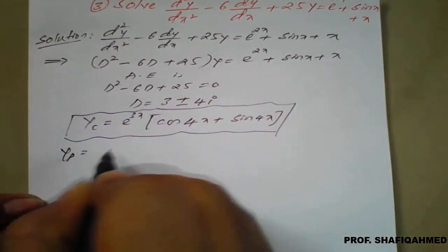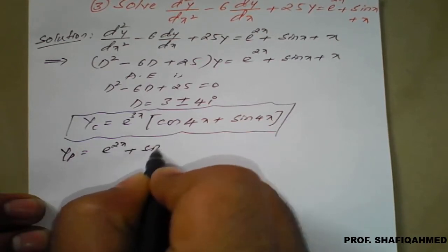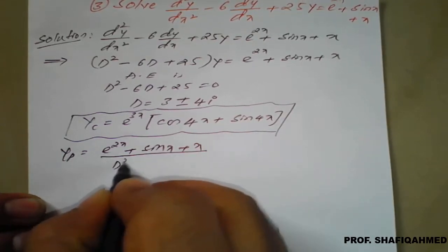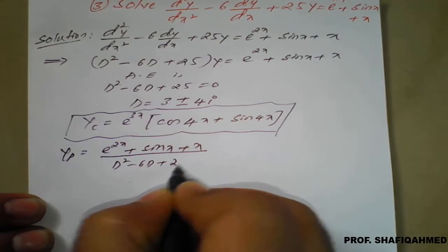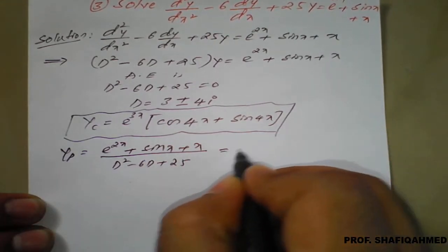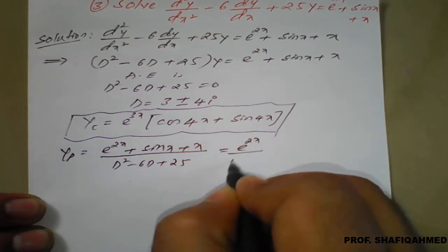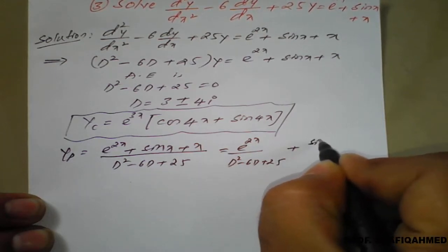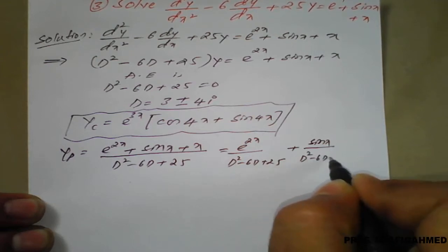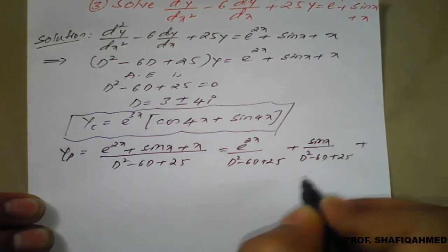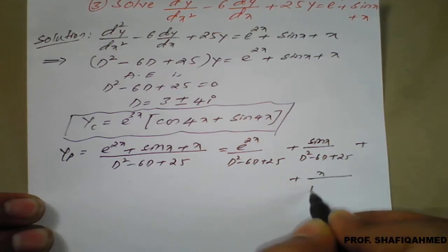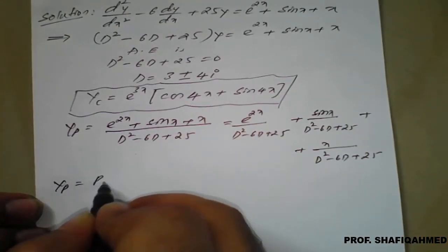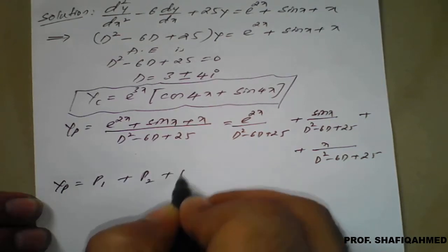Yp is given by e raised to 2x plus sin x plus x, all divided by d squared minus 6d plus 25. We separate it as e raised to 2x upon d squared minus 6d plus 25, plus sin x divided by d squared minus 6d plus 25, plus x divided by d squared minus 6d plus 25. Therefore, our Yp will be P1 plus P2 plus P3.